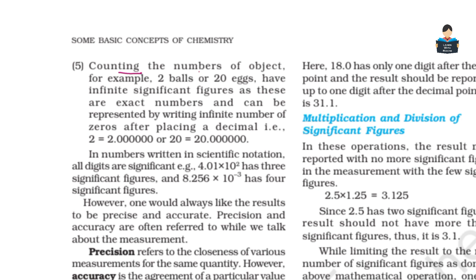Counting the number of objects — for example, two balls, 20 eggs — have infinite significant figures, as these are exact numbers and can be represented by writing an infinite number of zeros after placing a decimal.